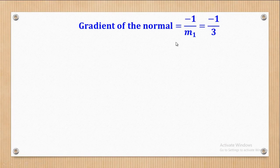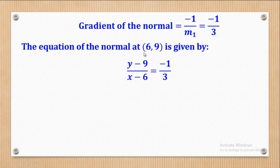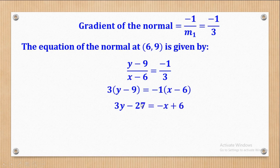Now for the gradient of the normal: it is the negative reciprocal of the gradient of the tangent, so it will be negative 1 over 3. The equation of the normal is given by: change in Y over change in X equal to negative 1 over 3. We cross multiply to get the expression, open the brackets, and make Y the subject to give the equation of the normal at point (6, 9).